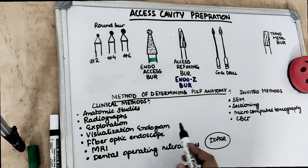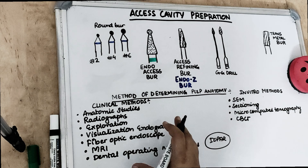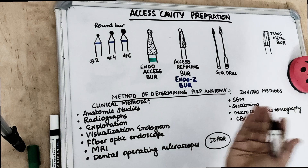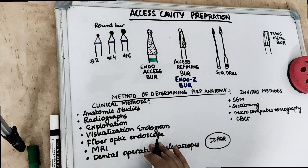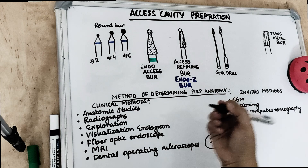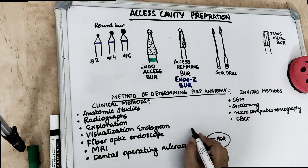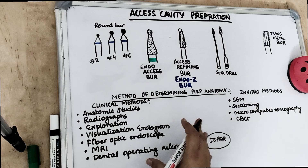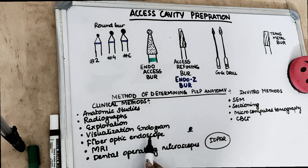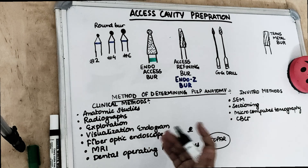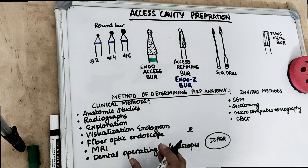High-resolution computed tomography provides 3D pictures of the root canal using computer imaging, where the computer processes the image. Fiber optic endoscopes are another method — these have a rod lens system providing magnifying intracanal visualization. We can enlarge the views inside the canals and see if any calcification is present. Fiber optic endoscopy is a good method to visualize canal anatomy using magnifying intracanal visualization.